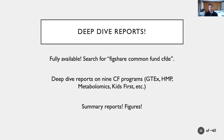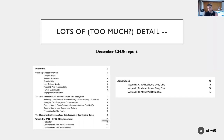We've actually produced three different reports — a July report, an October report, and a December report — containing deep-dive reports generally in the neighborhood of 10 to 15 pages on nine different Common Fund programs: GTEx, HMP, metabolomics, Kids First, and so on. They also contain a very readable summary report and a bunch of figures. If you want to know more about what a particular Common Fund data coordinating center is doing, you can read these reports, do your keyword search, and find a bunch of really fascinating information.